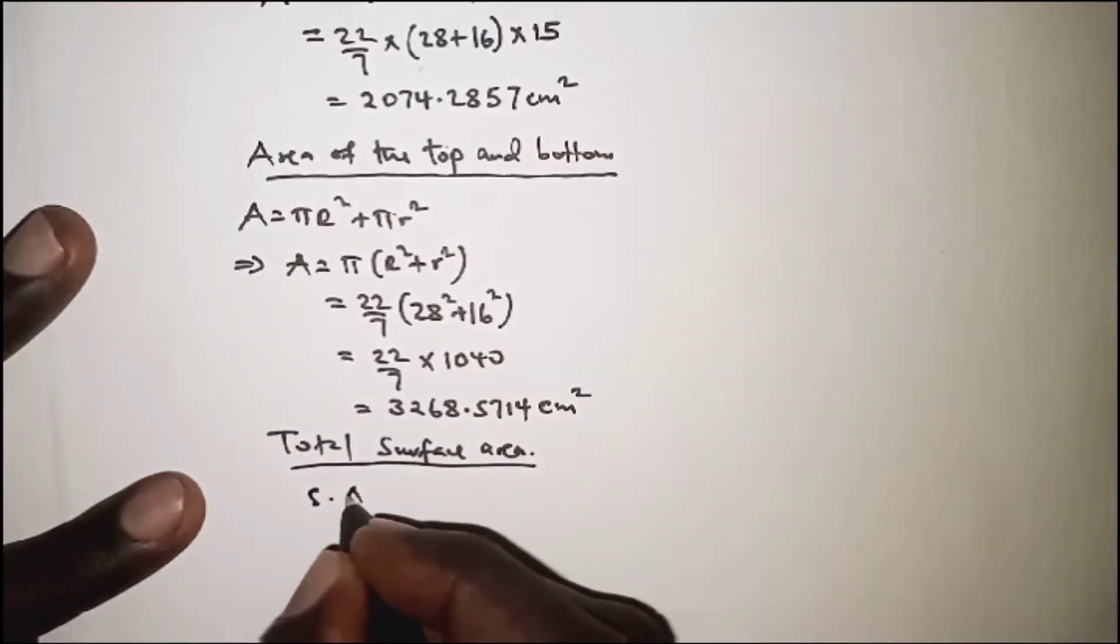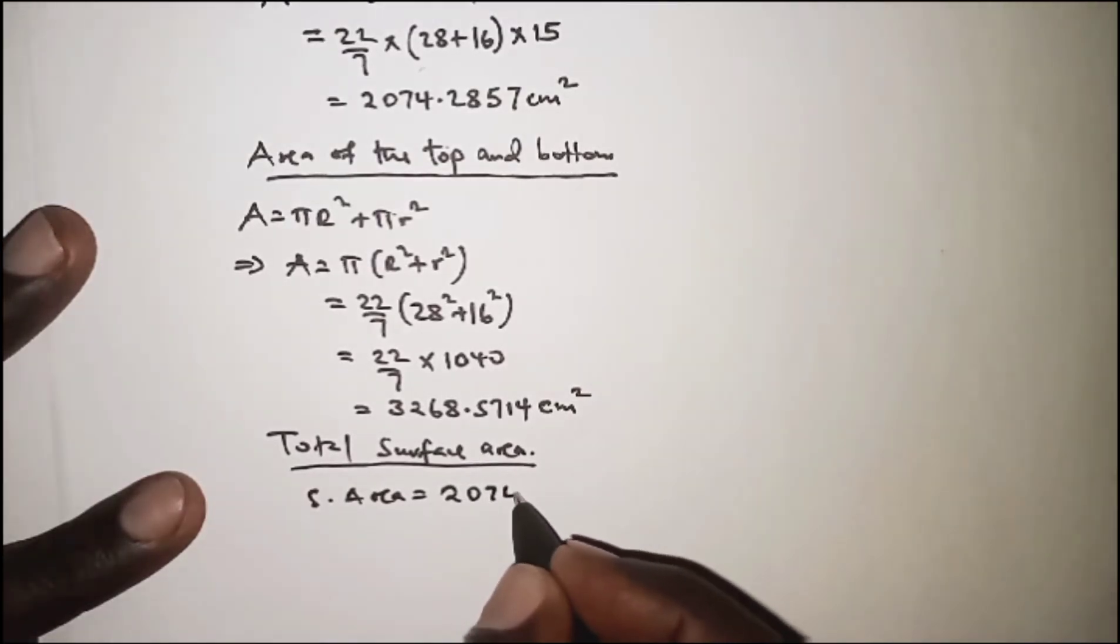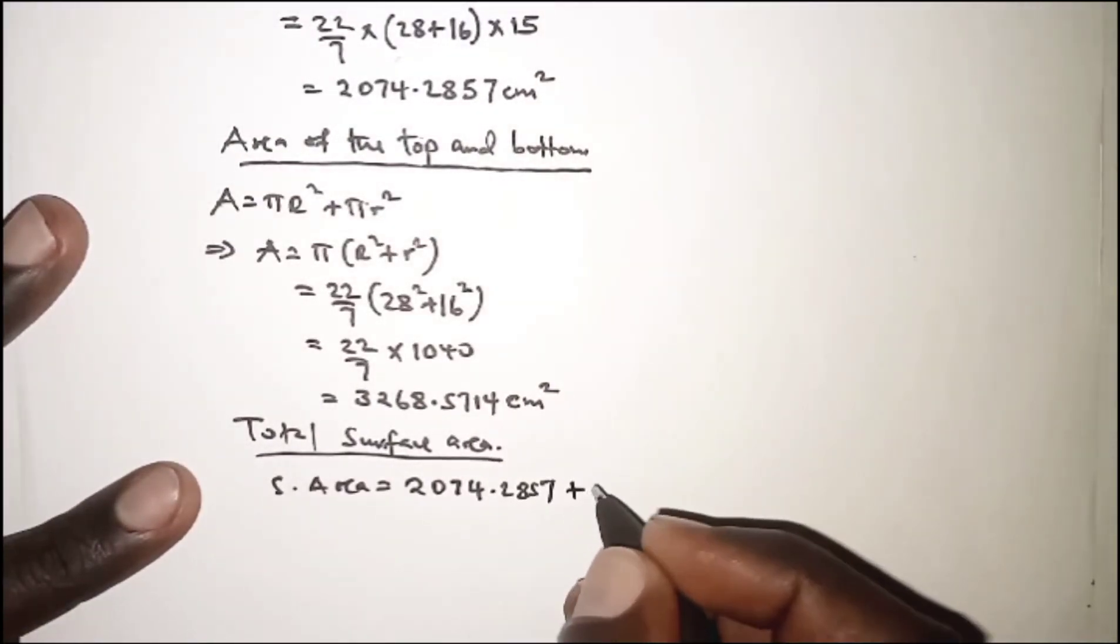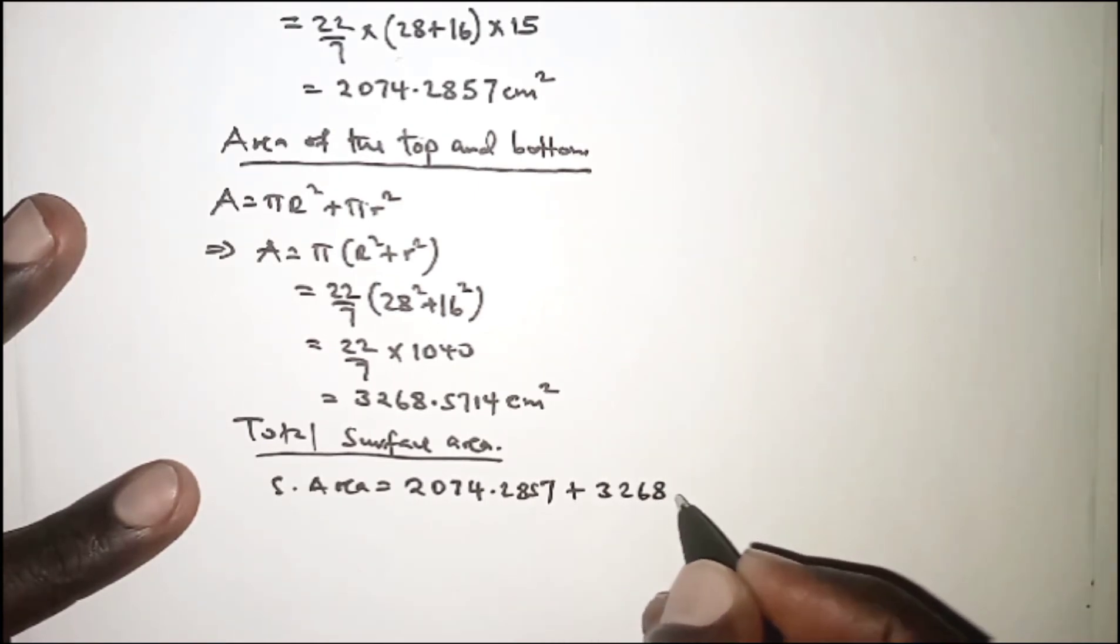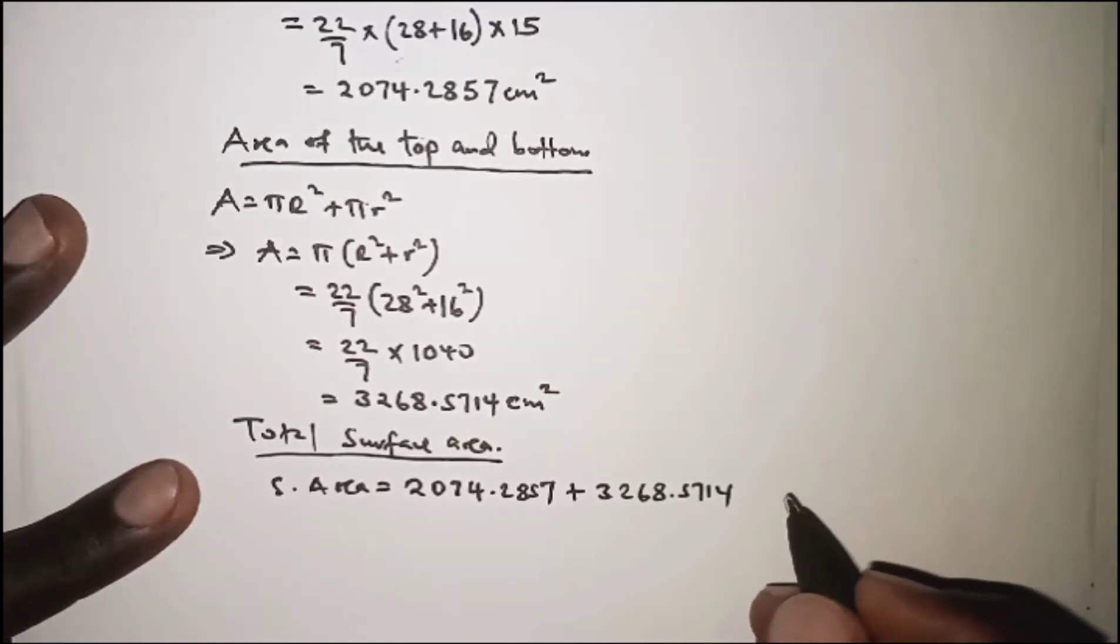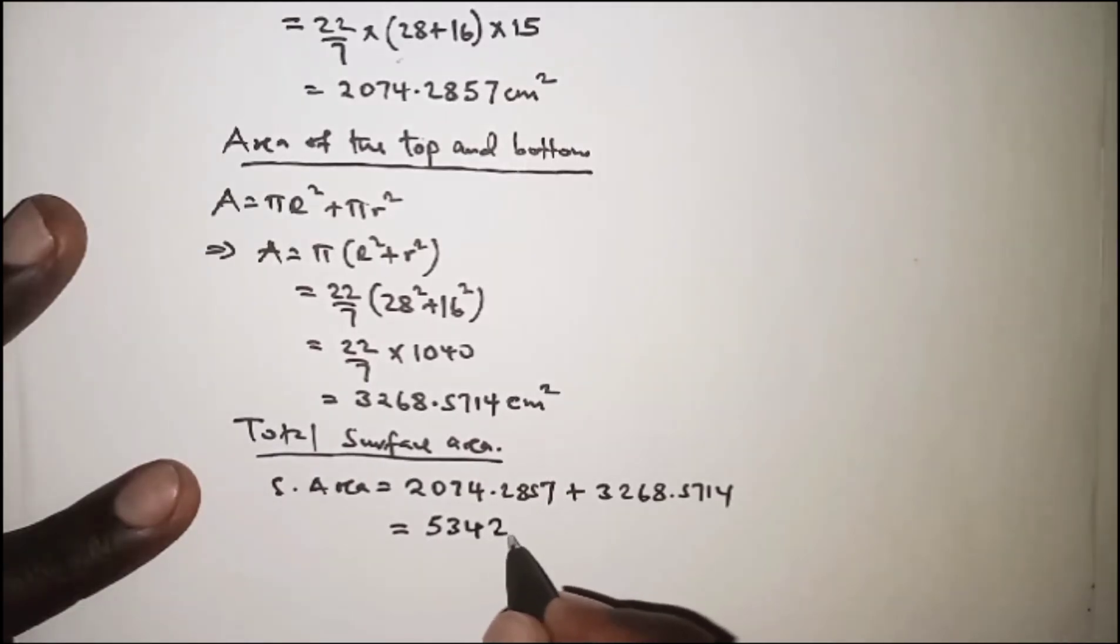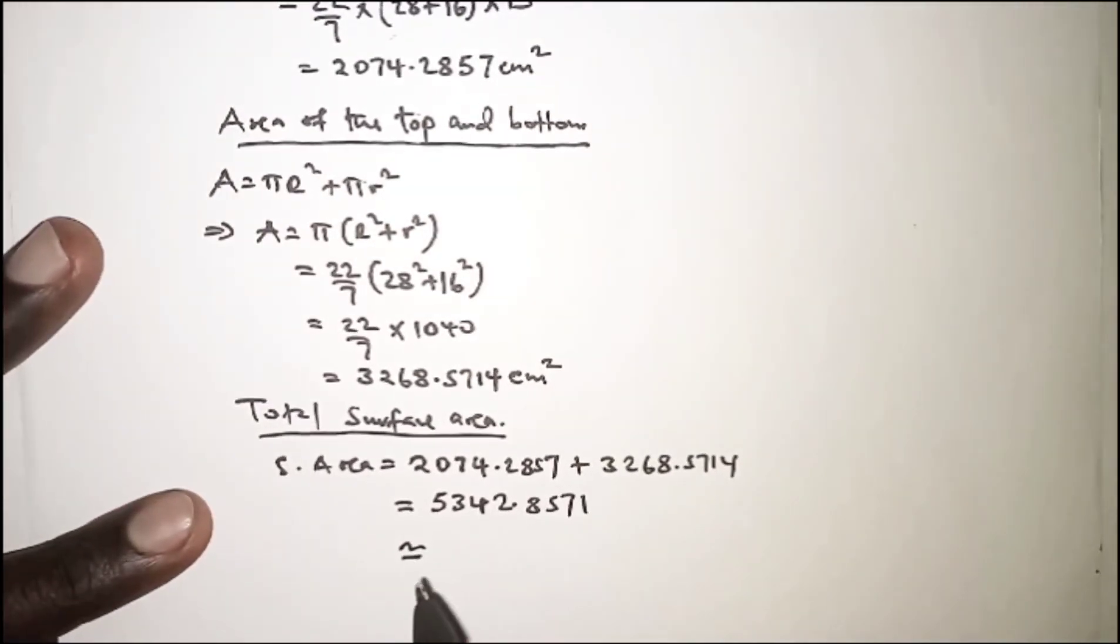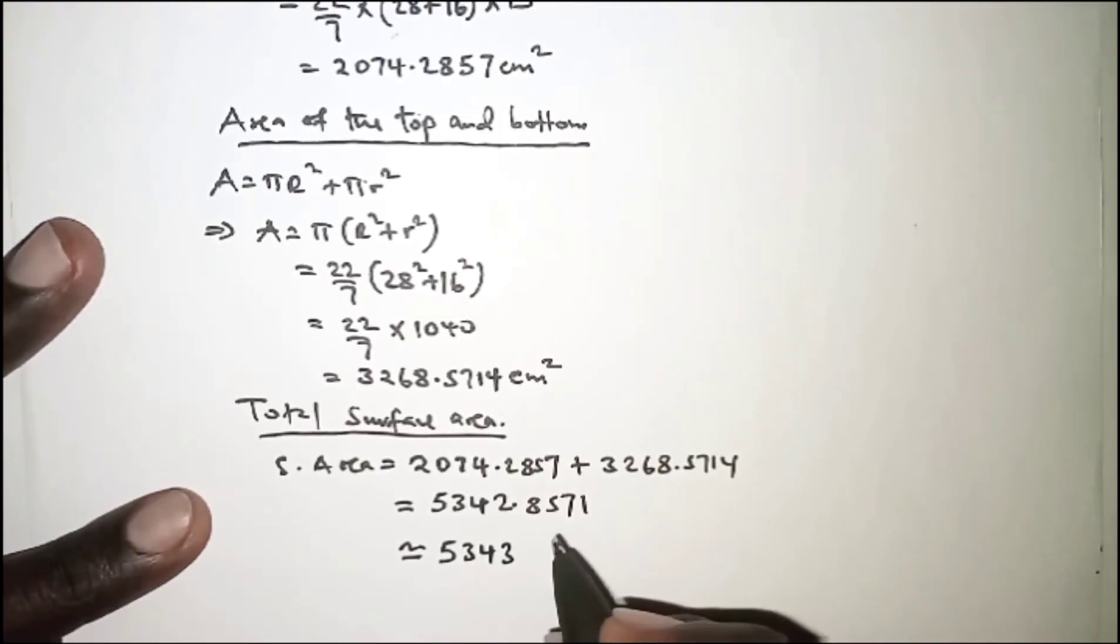The surface area is 2074.2857 for the curved surface plus the top and the bottom, that is 3268.5714, giving us a total of 5342.8571. And this is approximately 5343 square centimeters.